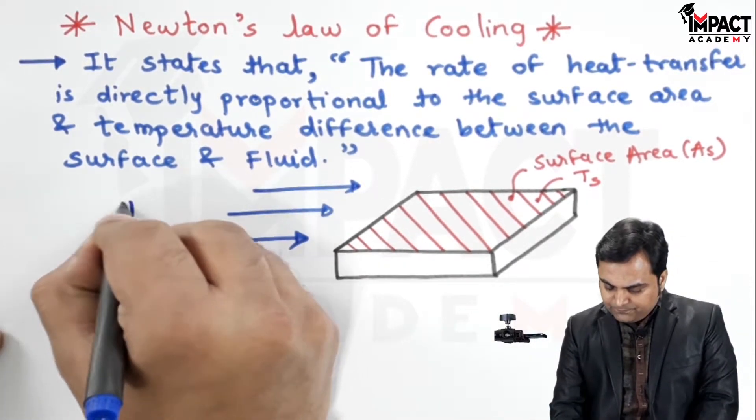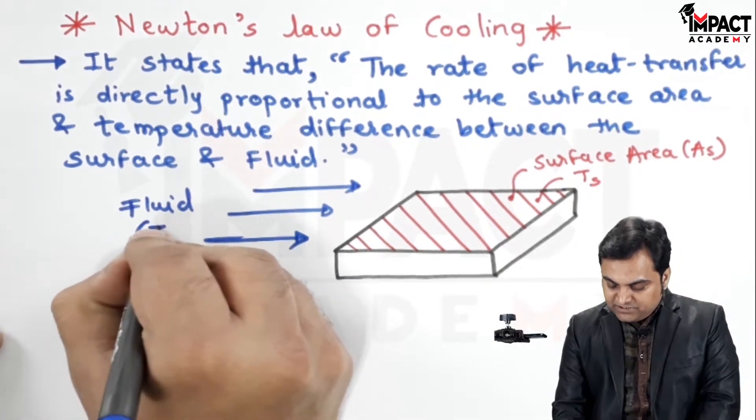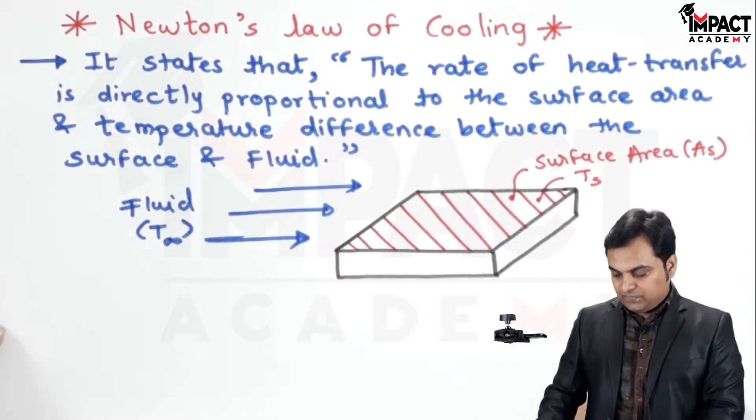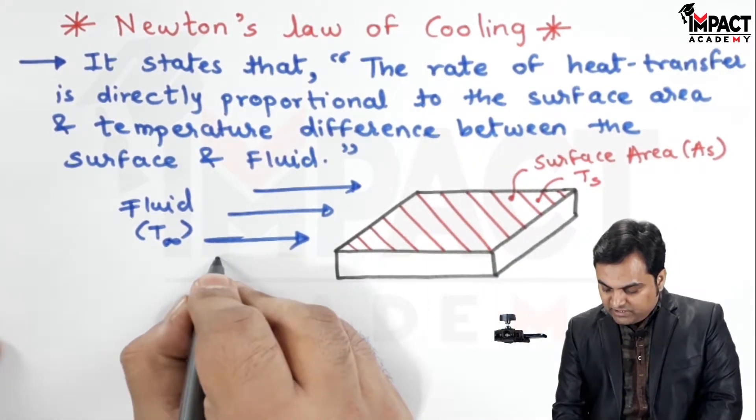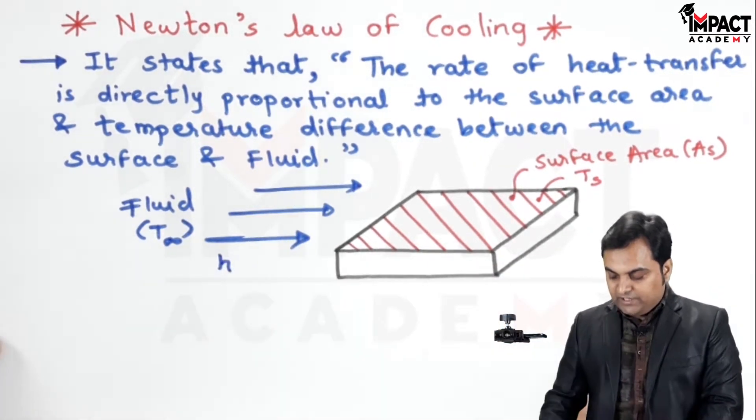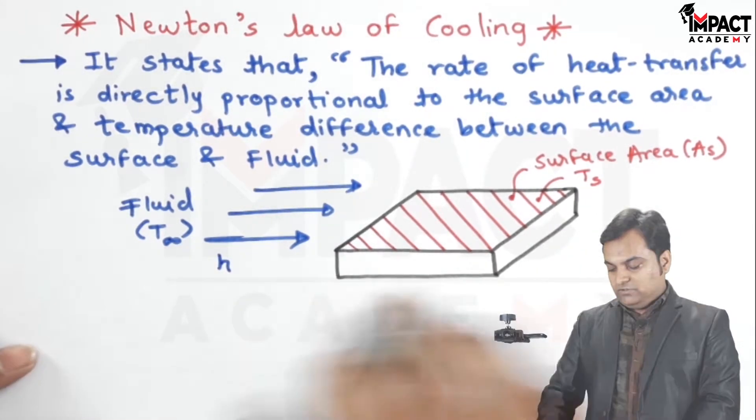Here, there is a fluid whose temperature is T infinity and this fluid is having convective heat transfer coefficient which is small h and it is passing over the plate.